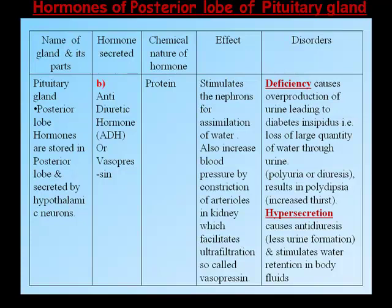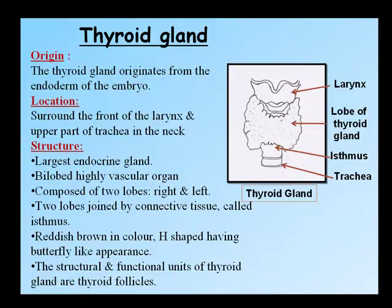The second posterior lobe hormone is Anti-Diuretic Hormone (ADH) or vasopressin, a protein. It stimulates the nephrons for reabsorption of water and increases blood pressure by constriction of arterioles in the kidney, facilitating ultrafiltration. Deficiency causes overproduction of urine leading to diabetes insipidus (polyuria), resulting in polydipsia (increased thirst). Hypersecretion causes anti-diuresis (less urine formation) and stimulates water retention in body fluids.